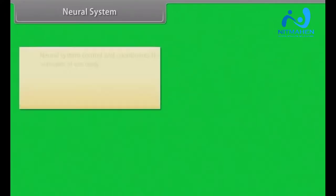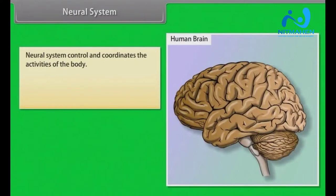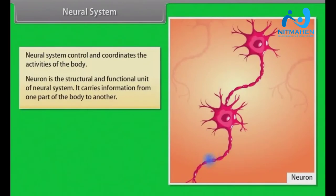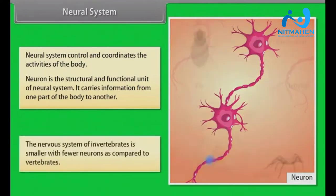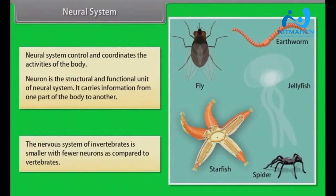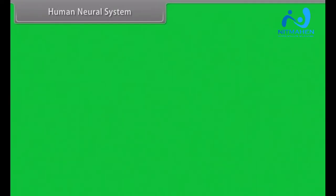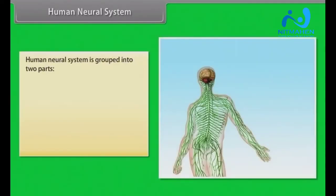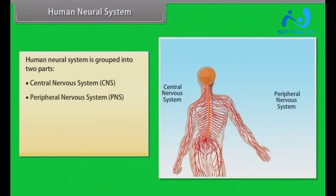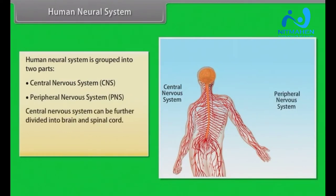The neural system controls and coordinates the activities of the body. Neuron is the structural and functional unit of the neural system. It carries information from one part of the body to another. The nervous system of invertebrates is smaller with fewer neurons as compared to vertebrates. The human neural system is grouped into two parts: central nervous system and peripheral nervous system. The central nervous system can be further divided into brain and spinal cord.